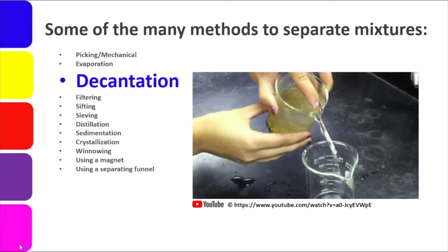The next one is decantation. Basically, it is the pouring out of the upper layer of a mixture — such as liquid-to-liquid immiscible mixtures where one rises and the other sinks, and then you pour out one of them. In our school labs, we do this in an experiment where solid and liquid are the mixture, making it easier for our activity. We pour out the liquid part and the solid part remains in the original container.